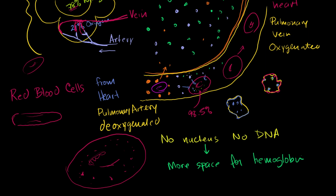The more hemoglobin you have, the more oxygen you can take up. Red blood cells also have very short lives — maybe 80 to 120 days. It's almost a philosophical question: are they still alive once they've lost their DNA, or are they just vessels for oxygen that aren't really living — since they aren't regenerating or producing their own DNA? In the next video, we'll talk more about hemoglobin and the circulatory system.